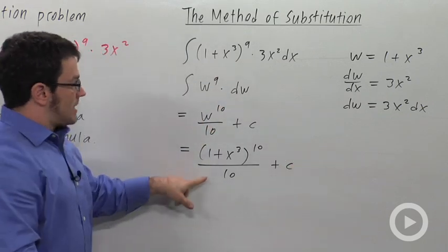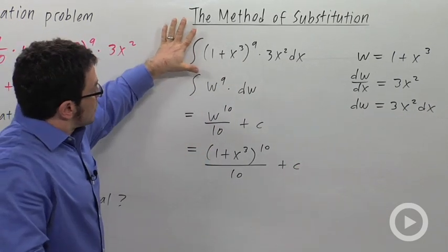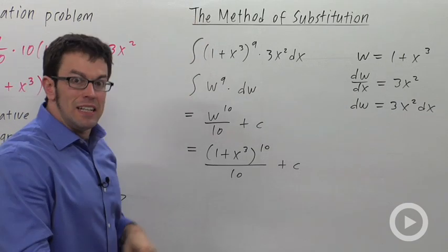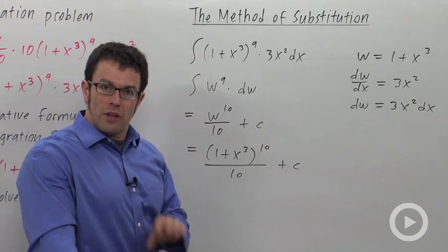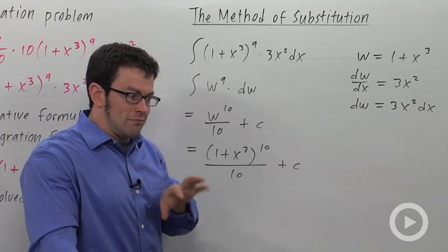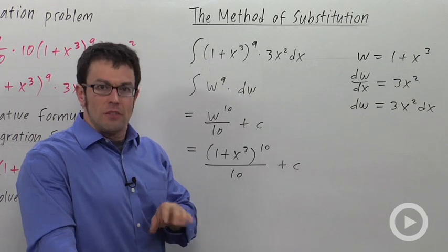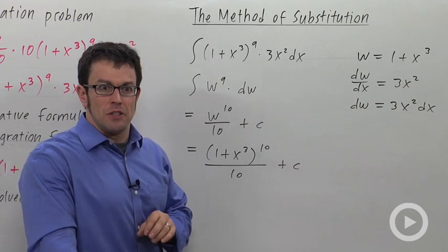And that's it. That's how you use the method of substitution to obtain an anti-derivative for a complicated function. It basically undoes the chain rule. So whenever you see a composite function or something that you don't think corresponds to any of the integration formulas you know, try to use the method of substitution.